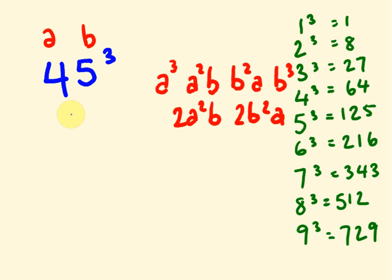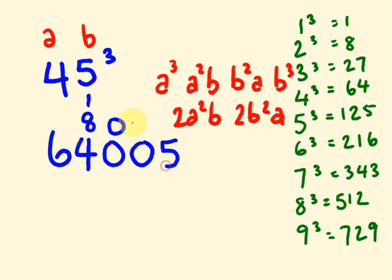So, A cubed. 4 cubed. I've written them over here. Again, they're really worth knowing. We have 64. Then what we have is A squared B. That's 16 times 5. 16 times 5 is 80. Then what we have is B squared A. So, 5 squared is 25 times 4 is 100. Now, look at that 100. I'm going to put that 0 there. That 0 there. And that 1 right all the way up there.